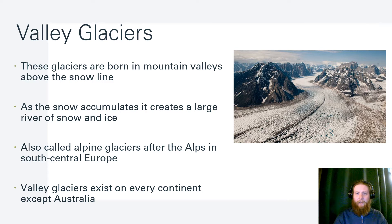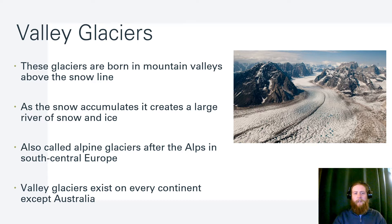Valley glaciers come from high up in the mountains above the snow line and come down to the snow line. This large river of ice is also referred to as alpine glaciers, after the Alps Mountains in south-central Europe — think Austria, Germany, Hungary. We have valley glaciers on every continent except Australia. Australia doesn't quite have that nice snow line to get valley glaciers.